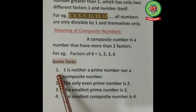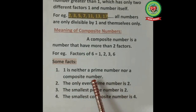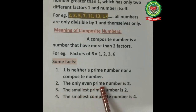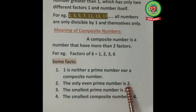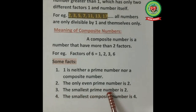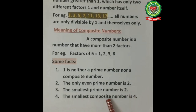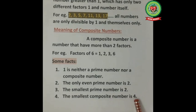First: 1 is neither a prime number nor a composite number. Second: the only even prime number is 2, because it is divisible by 2 and is the only such prime. Third: the smallest prime number is 2. Fourth: the smallest composite number is 4.